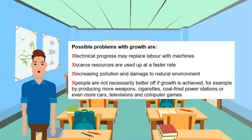Possible problems with growth are: technical progress may replace labor with machines, scarce resources are used up at a faster rate, increasing pollution and damage to the natural environment, and people are not necessarily better off if growth is achieved by producing more weapons, cigarettes, coal-fired power stations, or even more cars, televisions and computer games.